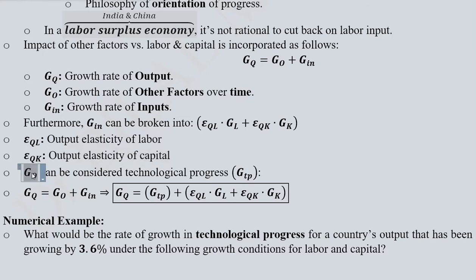The growth rate of the other inputs can be considered as the technological progress, because this is in addition to capital and labour. So by incorporating these substitutions, we can write G_TP here, and instead of G_IN, I can write its value that we have developed.